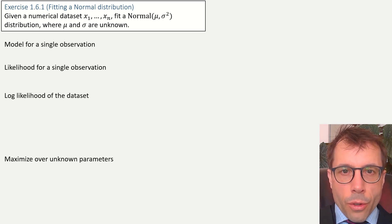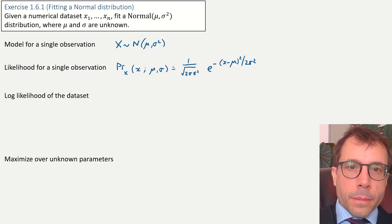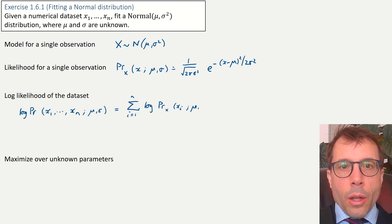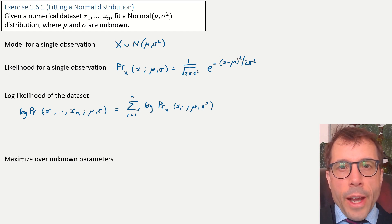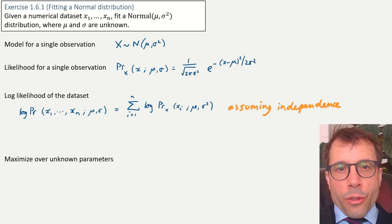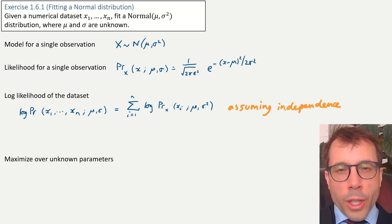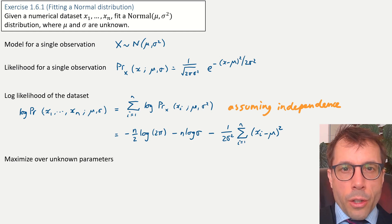Here are the steps. First, write out the probability model for a single observation in random variable notation. Next, look at the likelihood function for this random variable. Then write out the log likelihood of the entire data set — the likelihood is the product of the likelihoods of each individual xi, so the log likelihood is the sum. We should note that we're assuming x1 up to xn are all independent, which is a standard assumption in generative modelling but wasn't stated explicitly in the question — it's a modelling choice we should include in our answer.